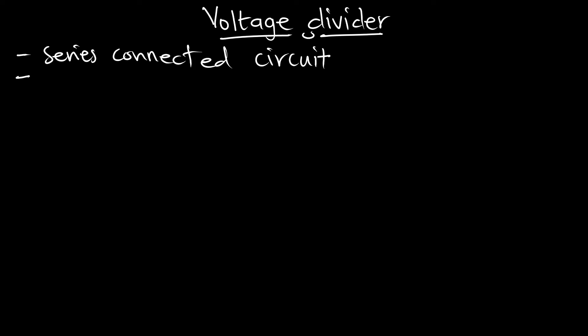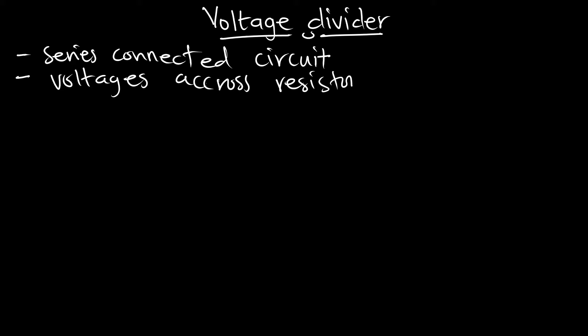What we are going to use it for is to find voltages — voltages across resistors. We are going to identify a series connected circuit and use the voltage divider rule or approach to find the voltages across one or any of the required resistors.